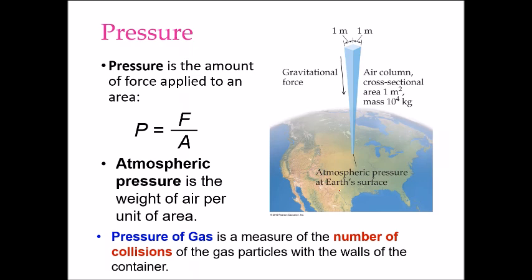In chemistry, we contain our gases in reaction vessels or rigid containers. That's the terminology you'll see in problems — 'reaction vessel' and similar words. What I want you to know is: number of collisions is what we're measuring. More collisions means higher pressure; less collisions means lower pressure.